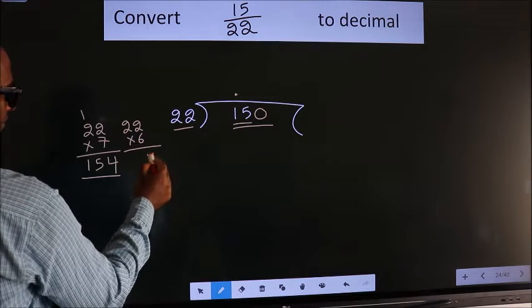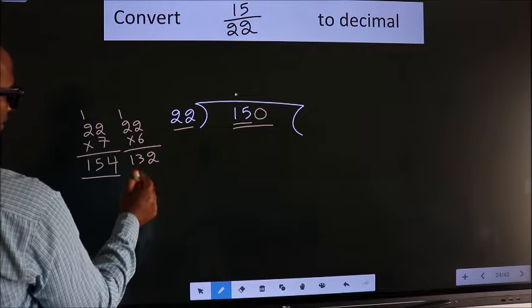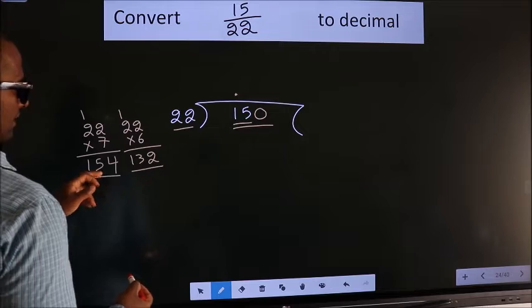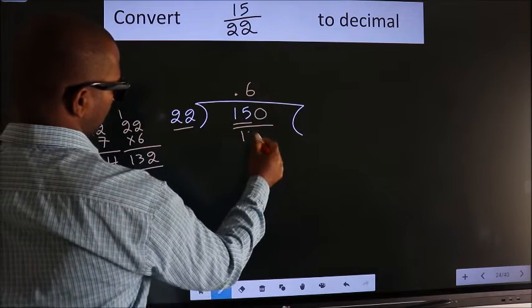6 into 2, 12. 6 twos is 12 plus 1, 13. So, we should take 132 since 154 is exceeding. So, 6 times 132.